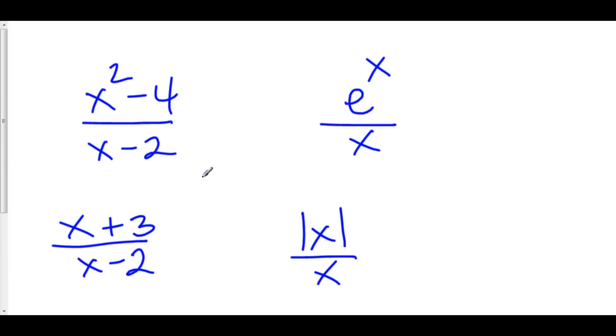These are all discontinuous functions at some specific x value. In the first one, we have a discontinuity at x equals two. Turns out that's a hole because it cancels out with the top.